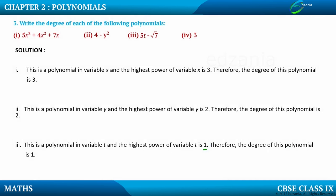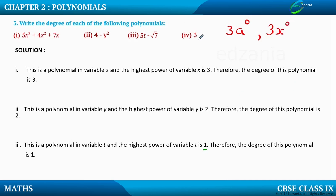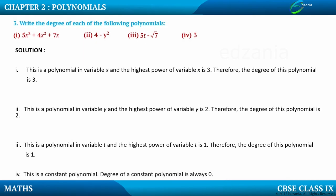In the last example, it is a constant polynomial. The degree of a constant polynomial is always 0. We can write the constant, say 3, as 3 times x raised to 0 or 3 times a raised to 0 — so the degree is 0.